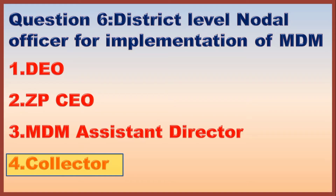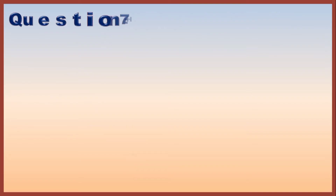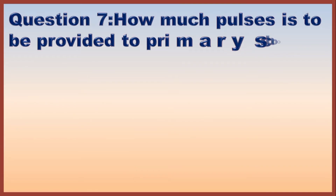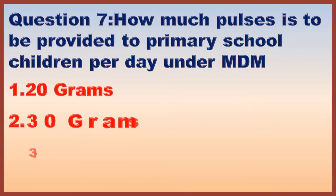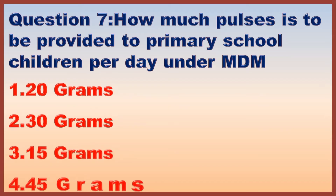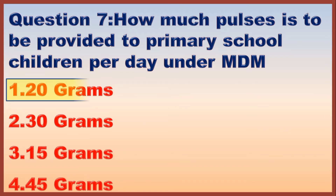Question 7. How much pulses is to be provided to primary school children per day under MDM? Correct answer is option 1: 20 grams.